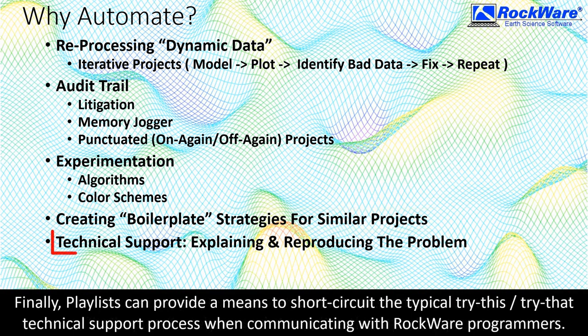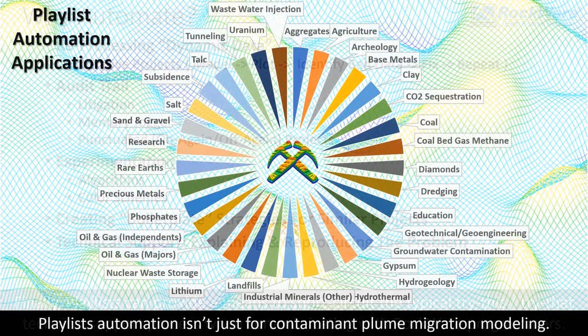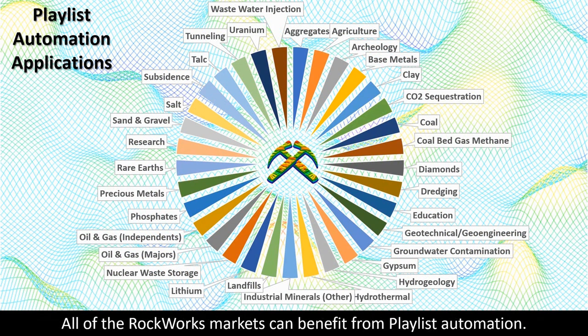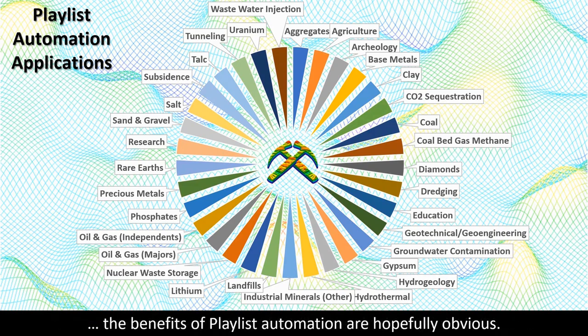Finally, playlists can provide a means to short-circuit the typical try-this-try-that technical support process when communicating with RockWare programmers. Playlist automation isn't just for contaminant plume migration modeling. All of the RockWorks markets can benefit from playlist automation. If the answer to the question 'will I ever do this again?' is yes, the benefits of playlist automation are hopefully obvious.